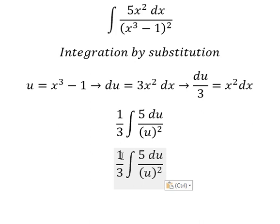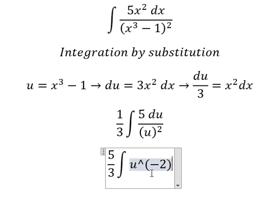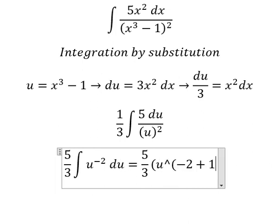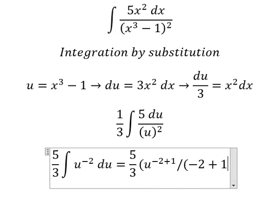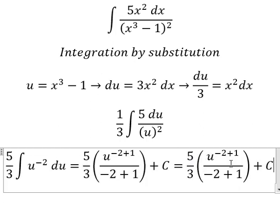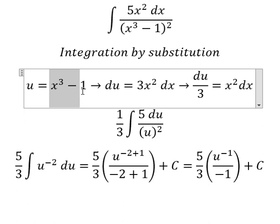We change s squared dx for du over 3. Number five we put outside. u squared we can write as u to the power of negative 2 du. The integral of u to the power of negative 2 gives us u to the power of negative 2 plus 1 over negative 2 plus 1, plus C. This simplifies to negative 1 over u, which is the final answer.